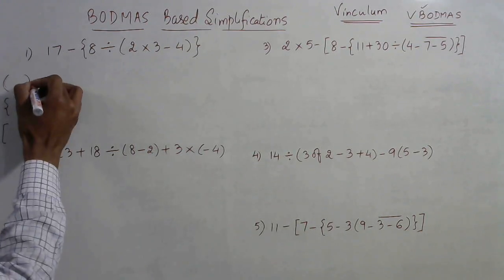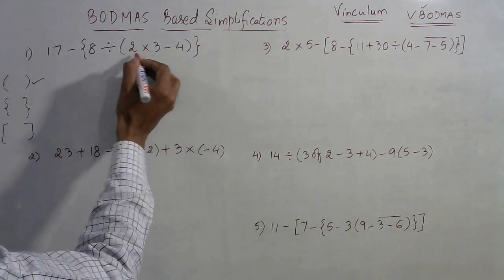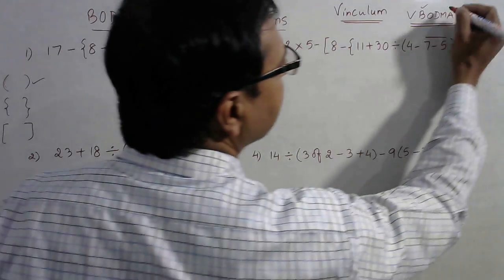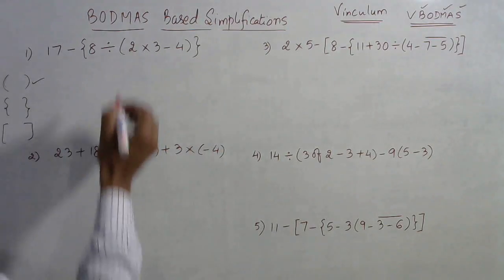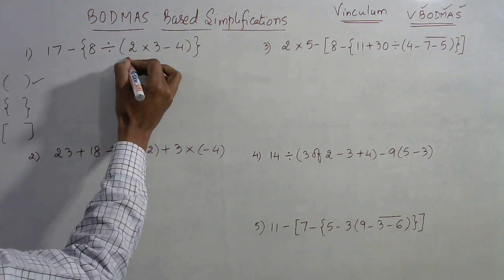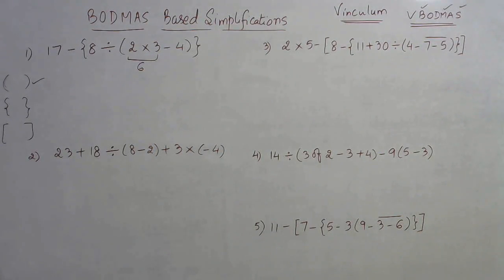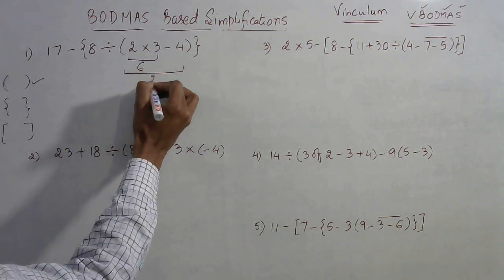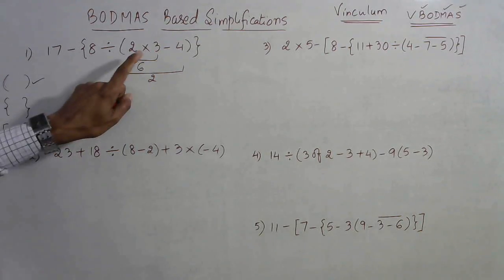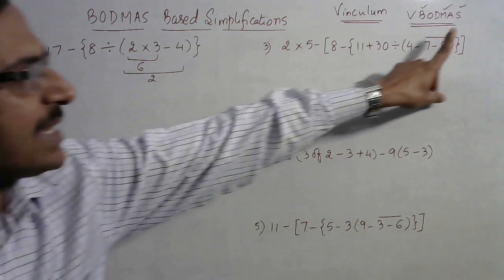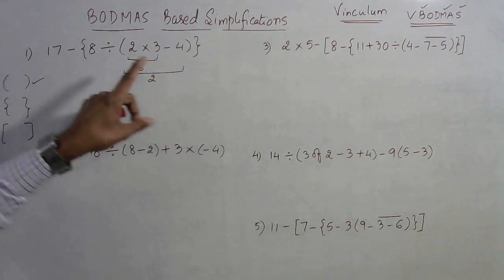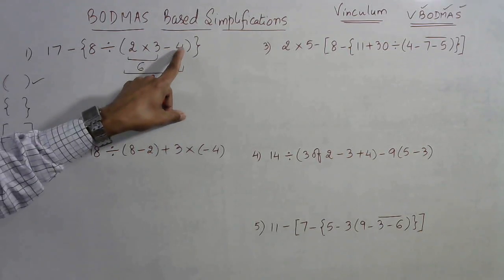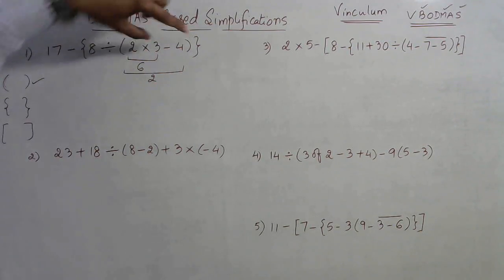Let us look at the terms in the first bracket. We have two operations: multiply and subtract. Among multiply and subtract, multiply comes first, so we multiply first. This part gives us 6, and now 6 minus 4 gives us 2. Again we have multiply and subtract — do not subtract first because S comes last, M comes first. So multiply: 2 into 3 is 6, and 6 minus 4 is 2. This bracket simplifies to 2.